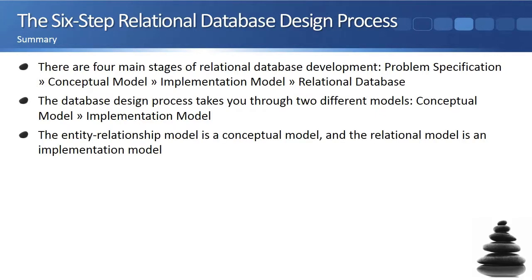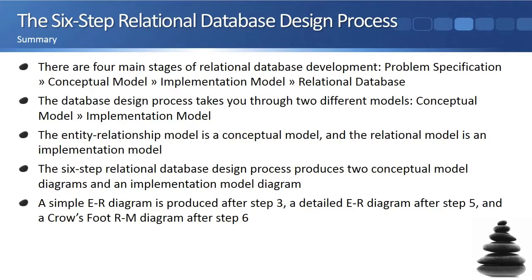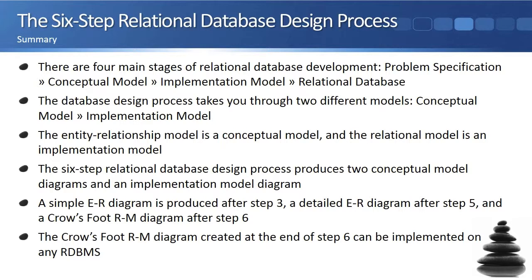The entity relationship model is a conceptual model, and the relational model is an implementation model. The six-step relational database design process produces two conceptual model diagrams and an implementation model diagram. A simple ER diagram is produced after step 3, a detailed ER diagram after step 5, and a crow's foot RM diagram after step 6. The crow's foot RM diagram created at the end of step 6 can be implemented on any RDBMS.